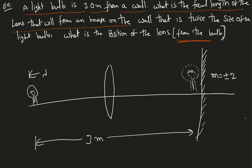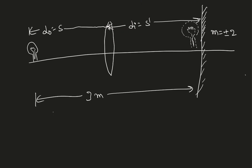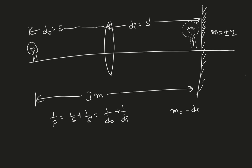The distance of the object is s (or d-naught) and the distance of the image is s-prime (or d-i), depending on your textbook. According to the lens formula: 1/f = 1/d-naught + 1/d-i. We also know that magnification m = -d-i / d-naught = height of image over height of object.